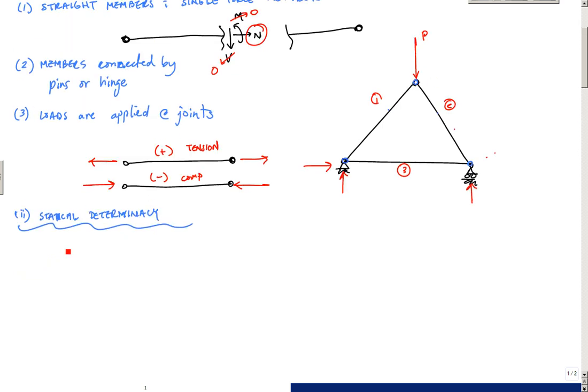It's based on the number of unknowns versus the number of equations that I have available. The number of unknowns in this case is one unknown per single force per member. So the number of members plus the number of reactions. And I want to know how does it relate to the number of equations I have.